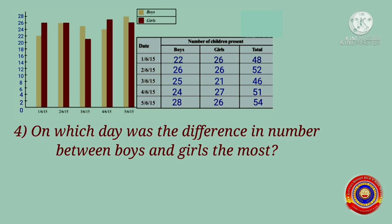Question 4: On which day was the difference in the number between boys and girls the most? We have to find the difference for each day. On 1st June, the difference is 26 minus 22 = 4. On 2nd June, the difference is 26 minus 26 = 0. On 3rd June, the difference is 25 minus 21 = 4.